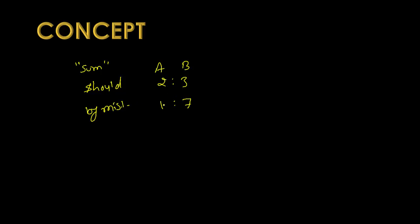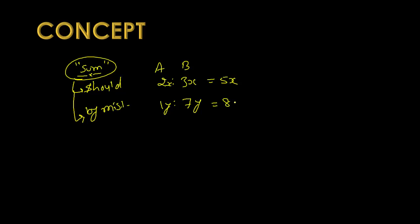The sum is a constant for both the should and the mistake case. A should get 2x, B gets 3x. By mistake A gets y and B gets 7y - two different ratios, two different multiplication factors. The total sum is 2+3 = 5x for should, and 1+7 = 8y for mistake. Since both totals are the same sum, 5x = 8y, so x/y = 8/5.